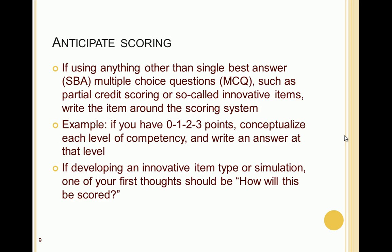Another thing to consider when writing items is to anticipate scoring. If you're using anything other than single best answer or multiple choice, such as partial credit scoring or innovative items, write the item around the scoring system. If you want 0, 1, 2, or 3 points in a partial credit system, conceptualize a response at each level of competency and write such an answer. If developing an innovative item type or simulation from scratch, one of your first thoughts should be: how will this item be scored? You could have a great idea for simulating a task, but if it's so complex you can't break it into scorable elements, it won't do any good to include it on your exam.